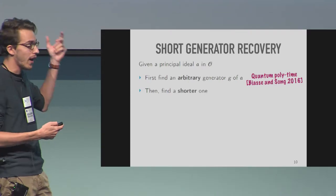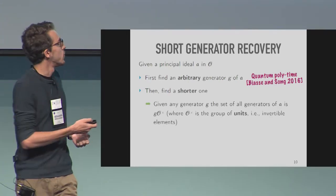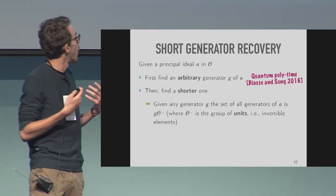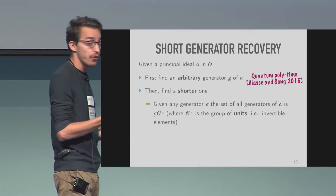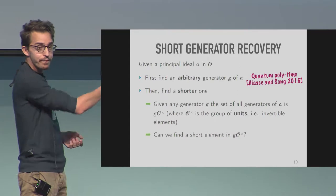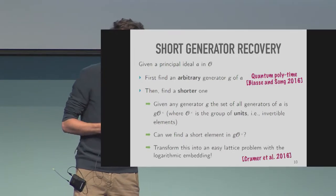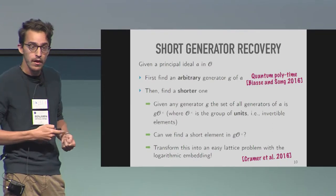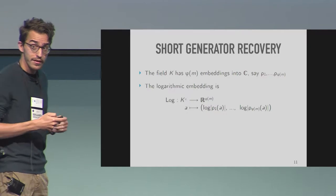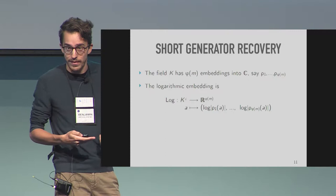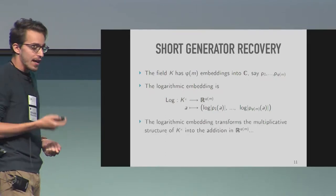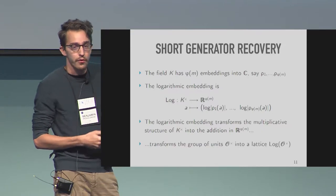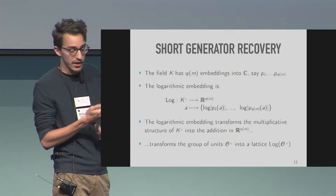If you have a generator, you have a search space: you're given an arbitrary generator G of A, so you know that the set of all generators is G times O*, where O* is the group of multiplicative units of your ring. You're looking for a short element in this set. The way to find it is by transforming this problem into a lattice problem through what we call the logarithmic embedding, as done in Cramer et al. 2016. The logarithmic embedding behaves as you'd expect from a logarithmic map — it transforms multiplicative structure into additive structure, taking the multiplicative structure of K* and transforming it into the additive structure of a vector space. In particular, it transforms the group of units O* into a lattice called the logarithmic unit lattice, written log of O*.